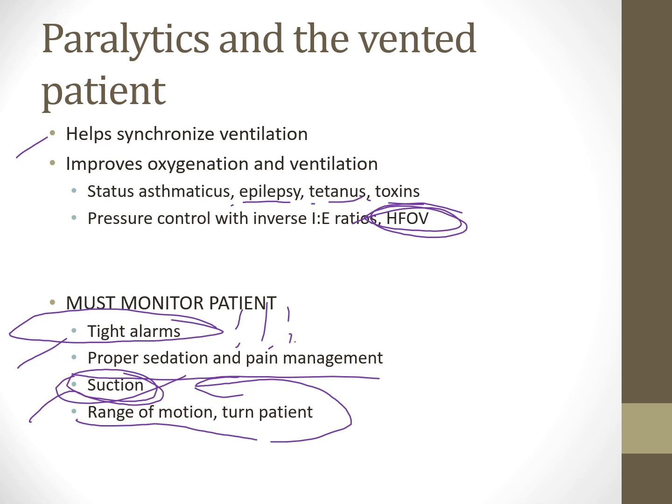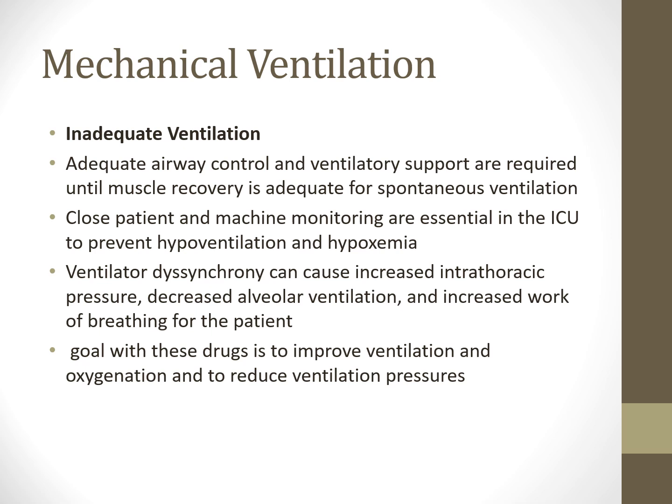Adequate airway control and ventilatory support are required until muscle recovery is adequate for spontaneous ventilation. One concern is how much atrophy is being caused. Keeping the patient alive and delivering adequate oxygen to the brain is primary, but we must understand that atrophy caused by paralysis can delay the patient from being weaned off the ventilator. They may need a tracheostomy or long-term acute care ventilation for long-term weaning because they have to rebuild that muscle.